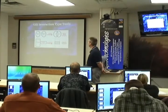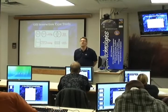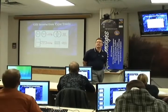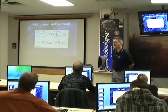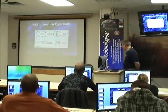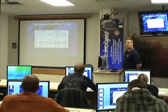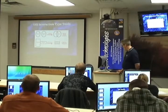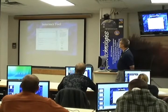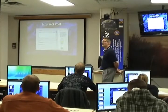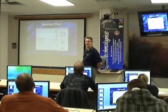GIS interaction type tools. We have unions, we have intersects. This is from kind of the Venn diagram approach — a mathematical approach. And here is our intersect tool inside of ARC GIS.